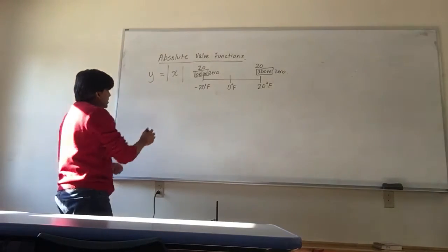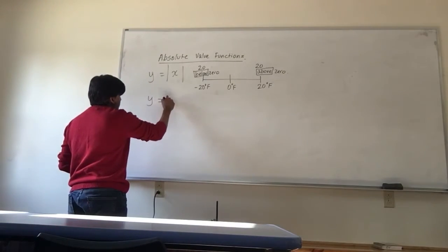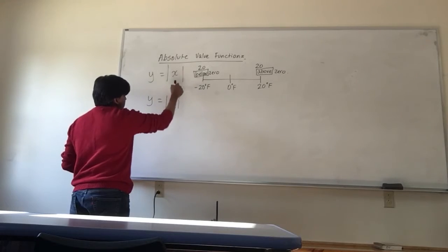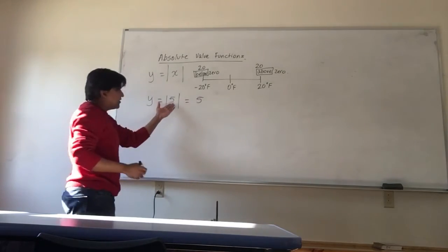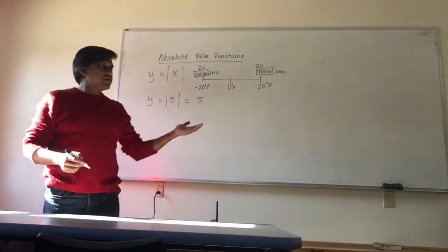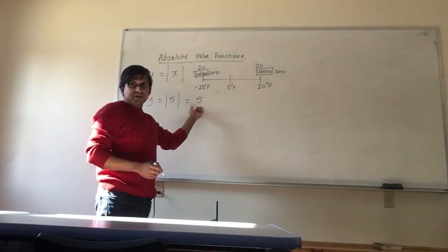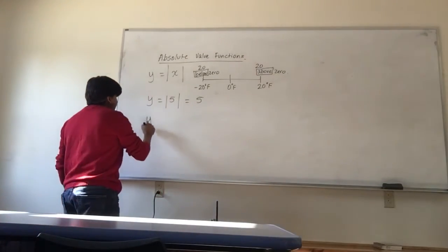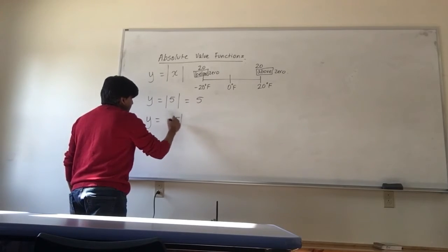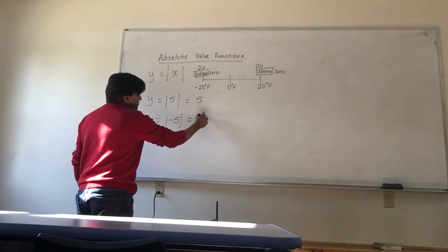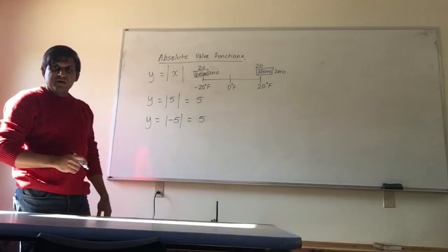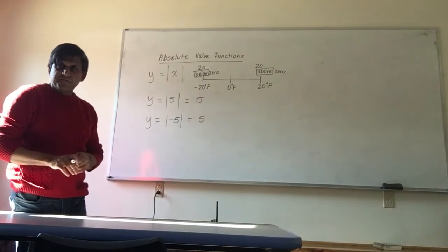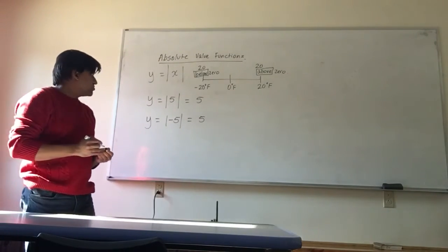So whenever I solve something like, let's say if X were 5, this will treat it as a positive. How far is positive 5 from 0? It's 5 away from 0. And how far is negative 5 away from 0? It's still 5 units away from 0. So that's the idea of the absolute value function.